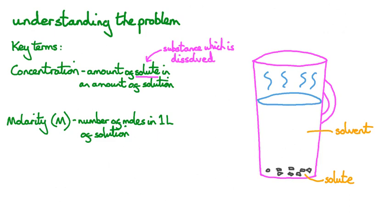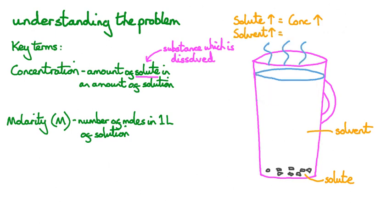We should also consider what happens to the concentration when we change the amount of solute or solvent. Again, our cup of coffee can help with this. If we increase the amount of solute — the instant coffee granules — the concentration of our whole cup of coffee gets stronger, which in chemistry terms means it becomes more concentrated. But if we increase the amount of solvent instead, adding more hot water to the same amount of coffee granules, our cup of coffee is going to be weaker, meaning a lower concentration. You can always return to our coffee cup analogy if you ever get stuck thinking about what should happen to the concentration if we change either the solute amount or the solvent.